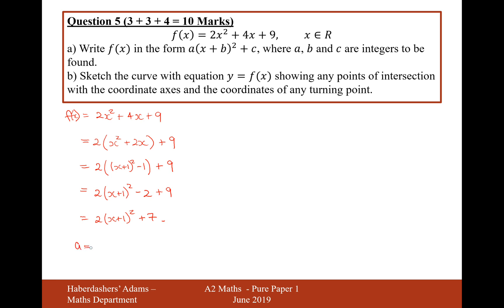Here A is equal to 2, B is equal to 1, and C is equal to 7. So let's now move on to part B. We now need to sketch the curve of this, showing any points of intersection on the axes and coordinates of any turning points.